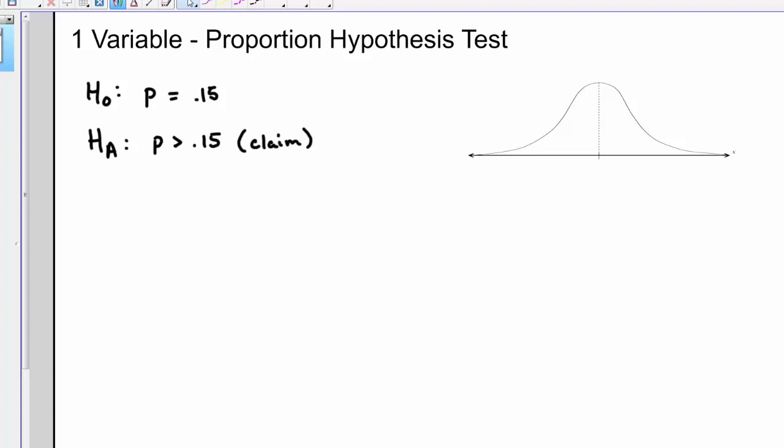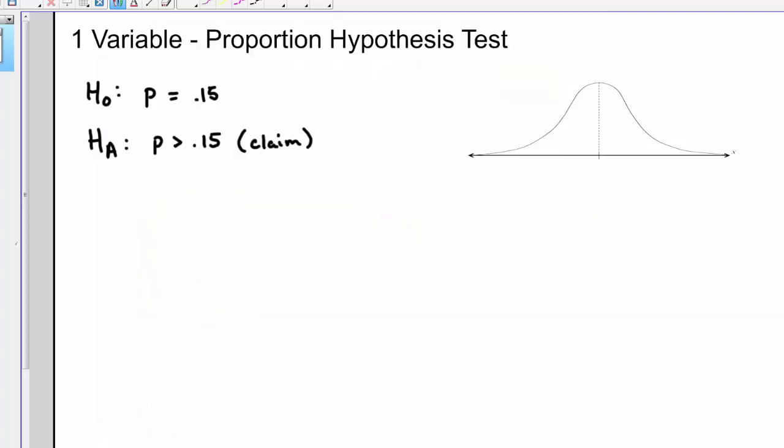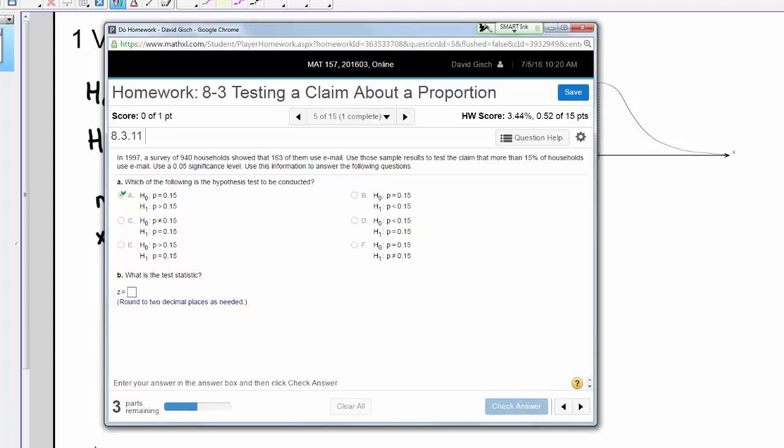One of the things this homework problem does not test or ask you to do is test your conditions. You should always test your conditions because if the conditions fail, you can't do the test. In this case, 940 households, 163 of them use email. That means n is 940. x is the number of successes because we're doing a proportion, sort of a binomial idea. That was 163 of them.